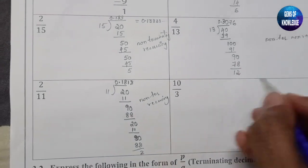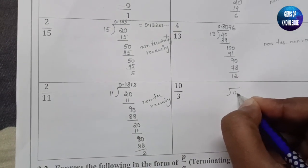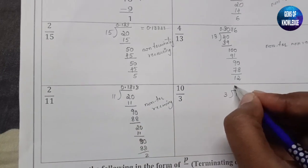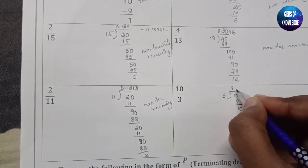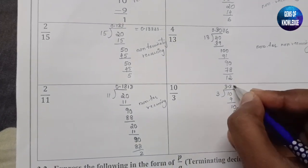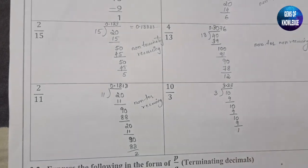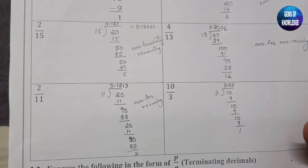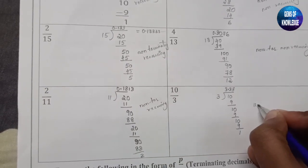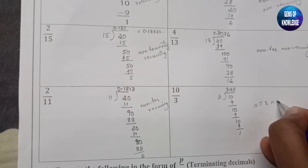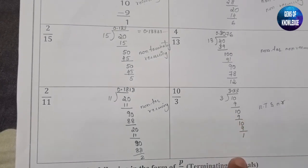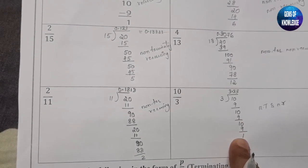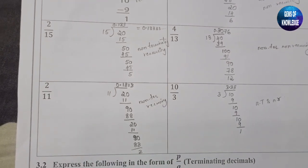The last one is 10 by 3. 3 threes are 9, remainder 1. Take a 0 — 3 threes are 9, remainder 1 again. Take another 0 — 3 threes are 9, remainder 1 again. So you get 3.33333... continuing, and the remainder is always 1. This is also non-terminating and non-recurring.